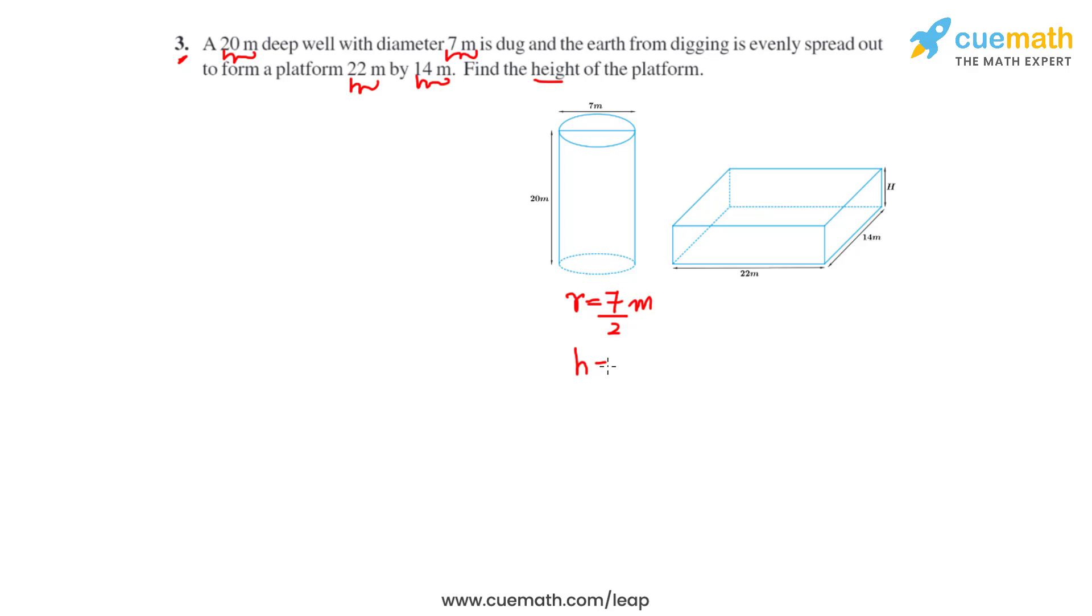The height, which is the depth, will be equal to 20 meters. Now the soil which is dug out from the well will be spread out evenly to form a platform which will be in the shape of a cuboid with length 22 meters, breadth 14 meters.